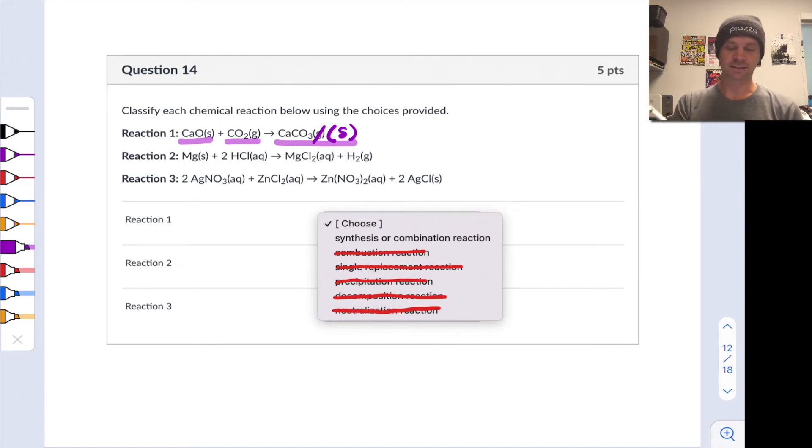And that leaves synthesis as the only remaining possibility. And it's worthwhile to verify here why this is a synthesis reaction. We're starting with relatively simple reactants, CaO and CO2, and forming one product that is, structurally speaking, a little bit more complicated, with bigger formula units, so on and so forth. So, this is indeed a synthesis reaction. All right.